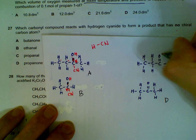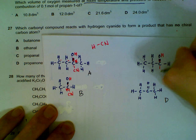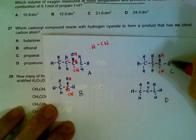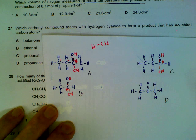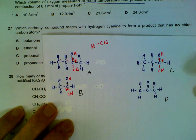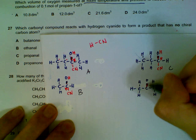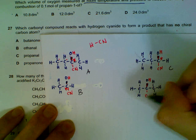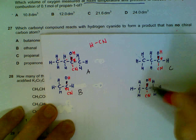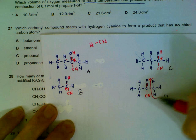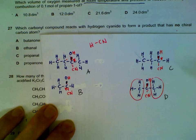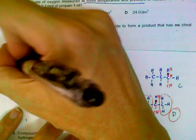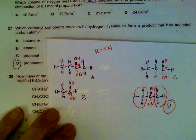For option D after adding HCN, we check the central carbon: it has two of the same groups attached, so it is not chiral. Options A, B, and C all produce chiral carbons, but option D does not give us a chiral carbon atom — D is the answer.